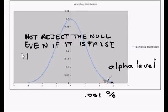And this would be what you call a type 2 error or beta.